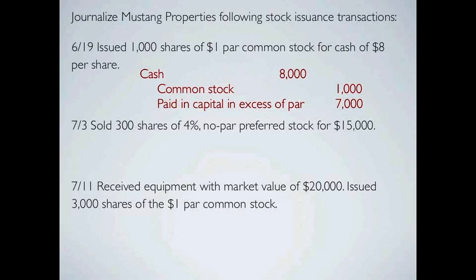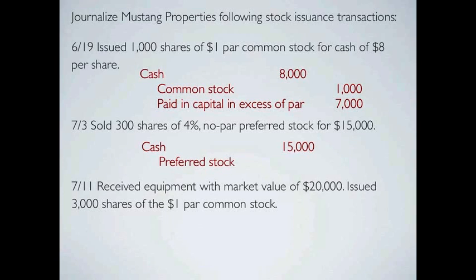On July 3rd — when we're talking about stock, sold and issued are synonymous. So we issued 300 shares of four percent no-par preferred stock for fifteen thousand dollars. The four percent is your dividend rate or dividend yield, but that isn't really playing a part here as we're just journalizing the transaction — dividends aren't part of this transaction. Since this is a no-par preferred stock, you journalize it as if you are issuing it at par. So we're getting cash of fifteen thousand dollars and we credit preferred stock for fifteen thousand dollars.